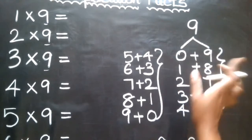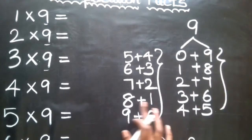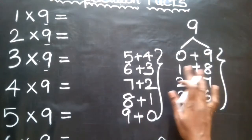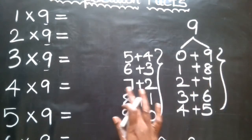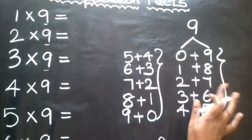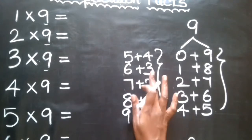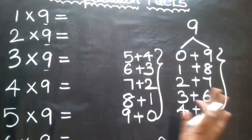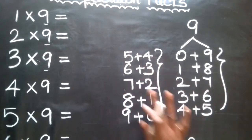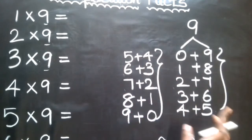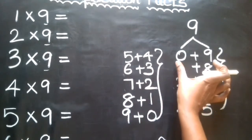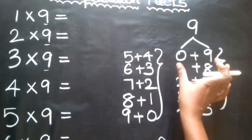9 plus 0, then 0 plus 9; 8 plus 1, then 1 plus 8; 7 plus 2, then 2 plus 7; 6 plus 3, then 3 plus 6; 5 plus 4, then 4 plus 5. So two-digit numbers all follow this pattern.